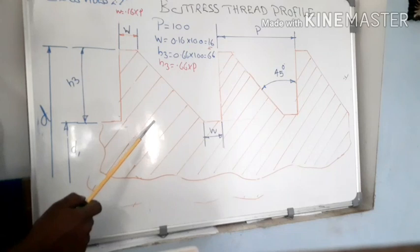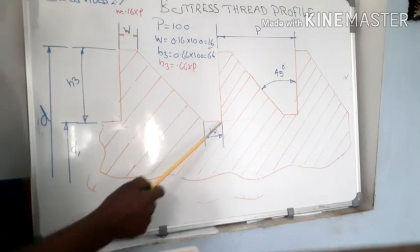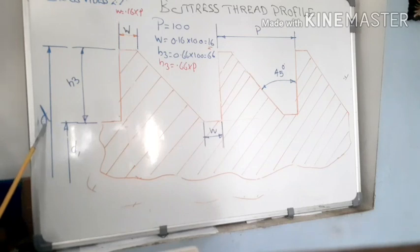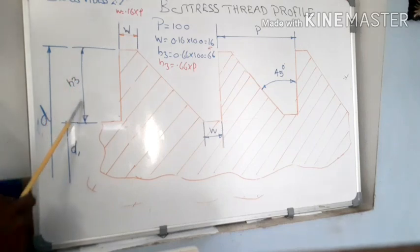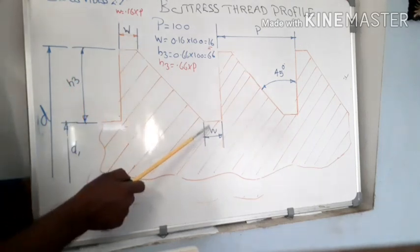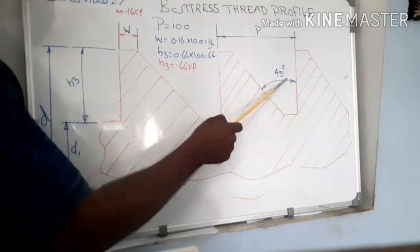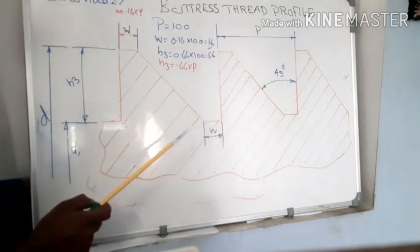And finally we have to draw the hatching line at 45 degree angle with 3 mm spacing, and mark all parameters like D, D1. D1 is the minor diameter, D is the major diameter, H3 is equal to depth of thread, W is the width of crest and root surface, and angle is 45 degrees.